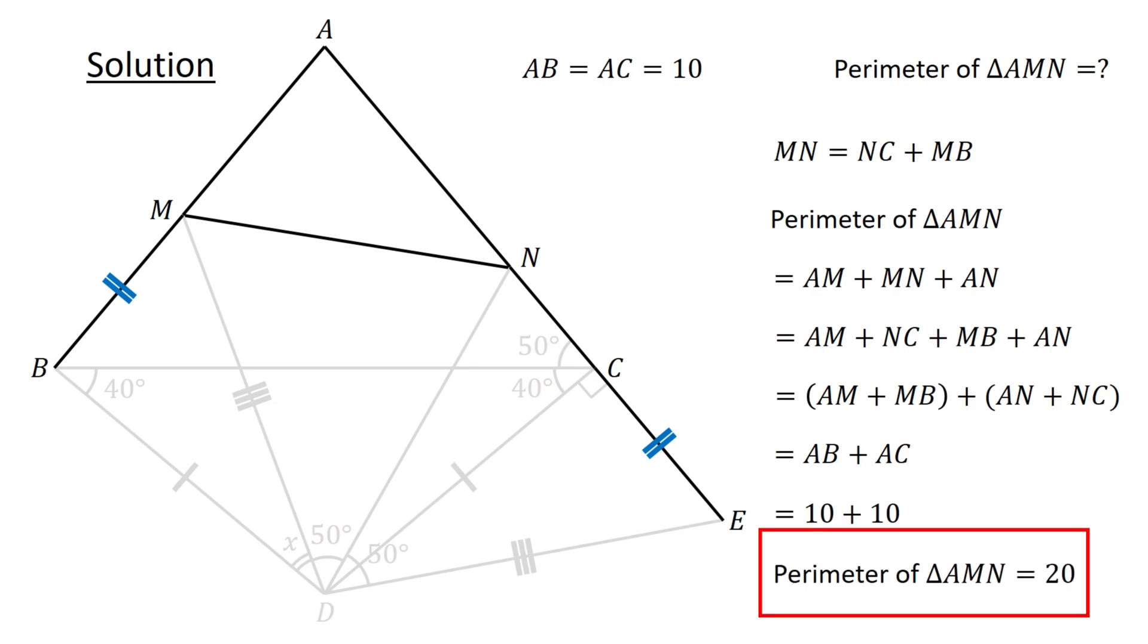Therefore, the perimeter is 20 units, which is the solution to our problem.